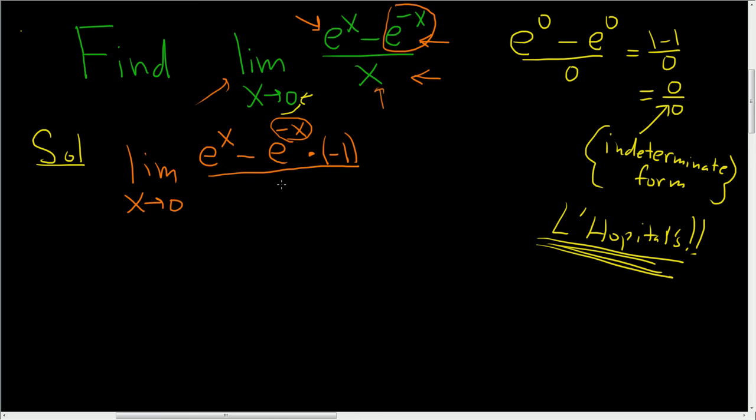On the bottom, the derivative of x is just 1. So we end up with the limit as x approaches 0 of e to the x plus e to the negative x all over 1. Why didn't I simplify the 1? I have no idea.